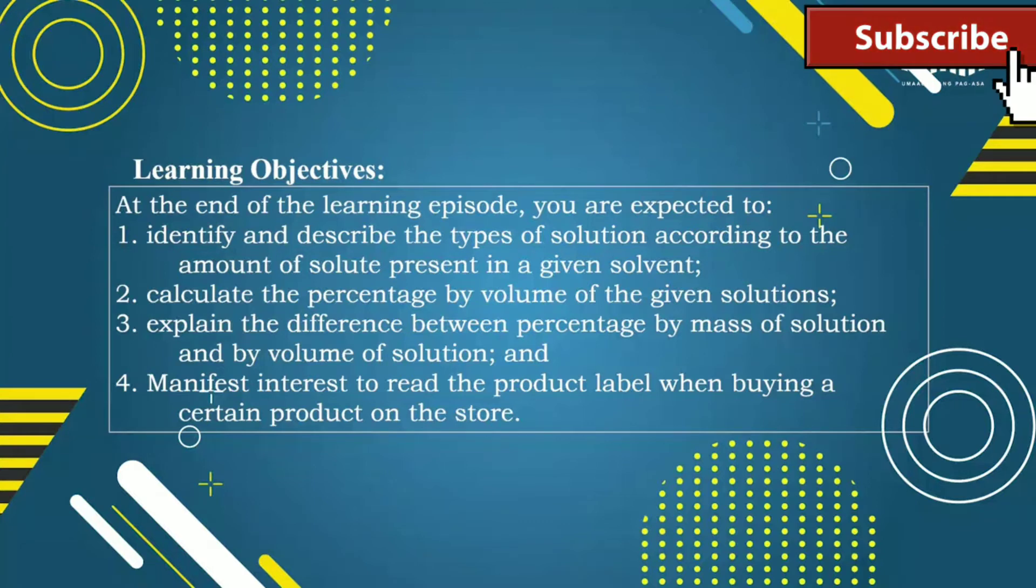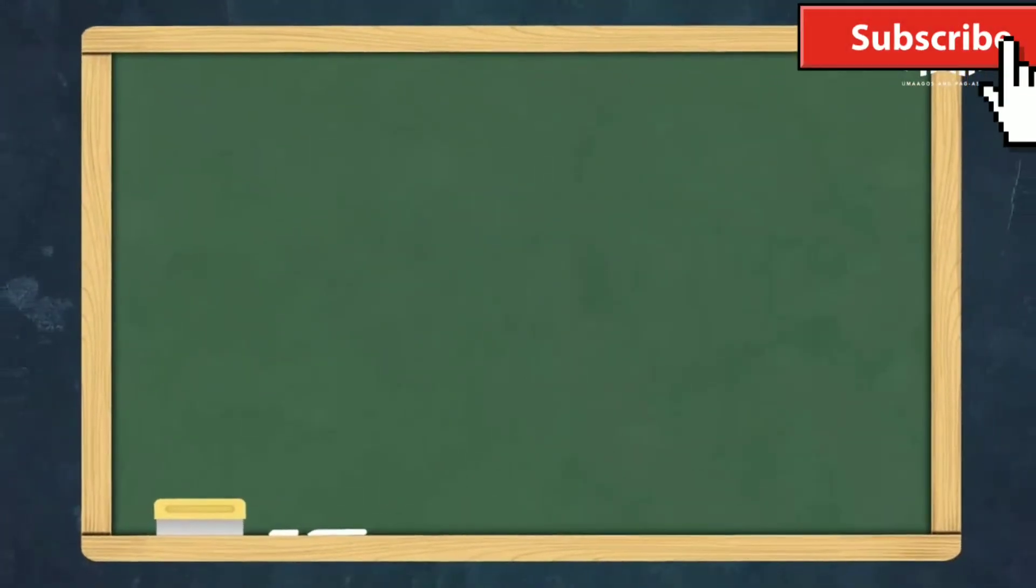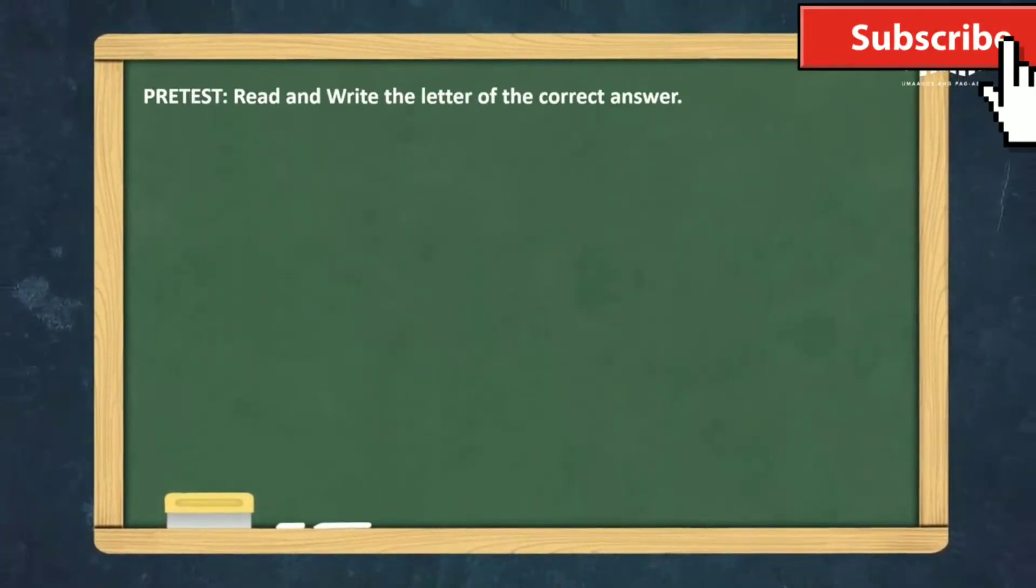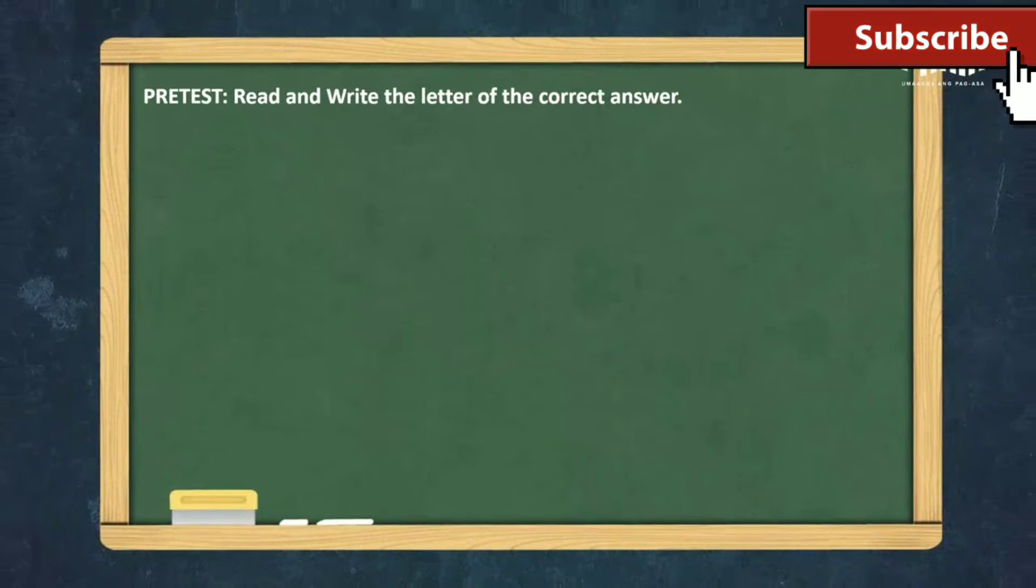And manifest interest to read the product label when buying a certain product on the store. Before we start, you may answer five questions first. Read each question and write the letter of the correct answer.